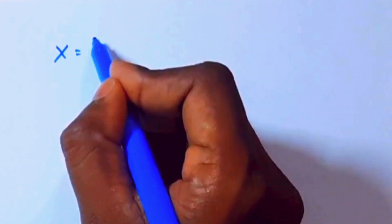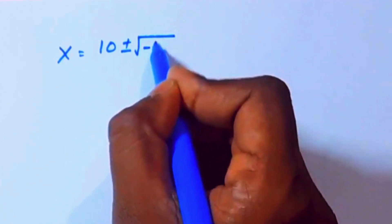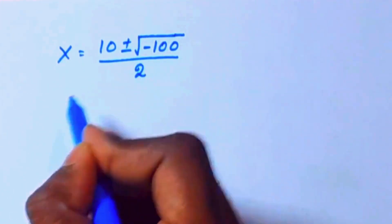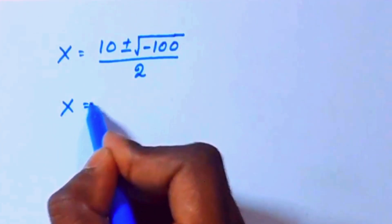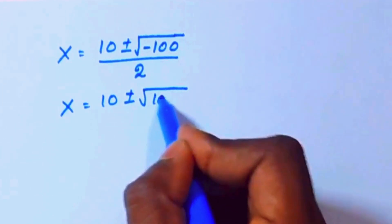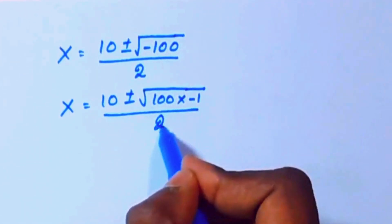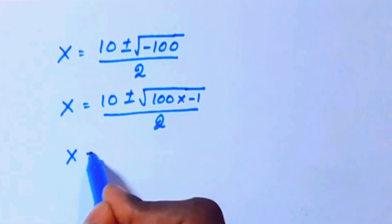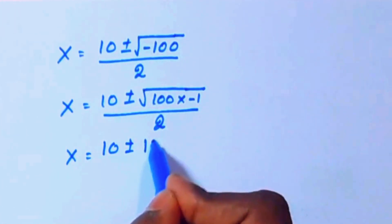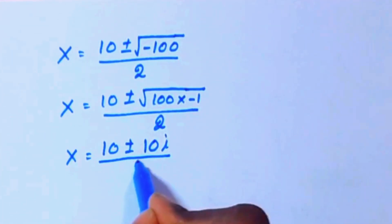So x equals 10 plus or minus square root of (100 minus 200) over 2, which is x equals 10 plus or minus square root of minus 100, over 2. This can be written as square root of 100 times minus 1, and the square root of 100 is 10, and the square root of minus 1 is i, over 2.